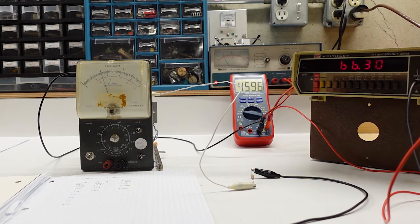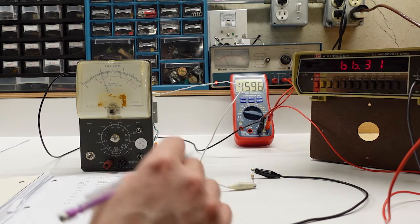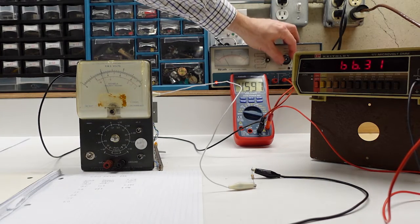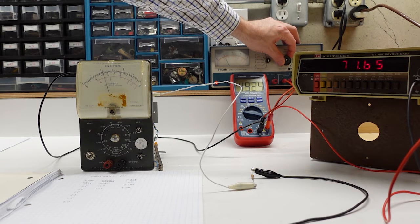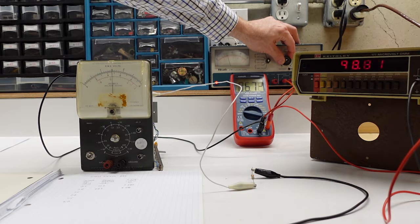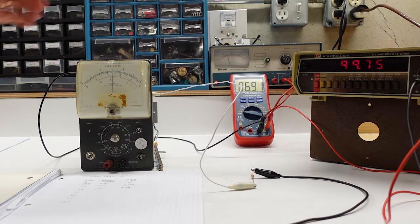The next test is to confirm the linearity of the meter. What I want to do is apply progressively increasing current up to the 200 microamp full scale and compare the meter reading to a reference ammeter of sufficient accuracy. So, for this test, I'm using my trusty Keithley-177, which I previously checked against a calibrated lab instrument and know its accuracy.